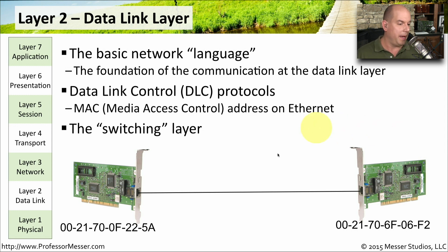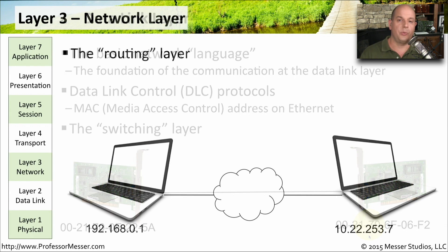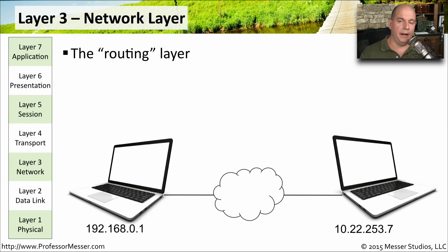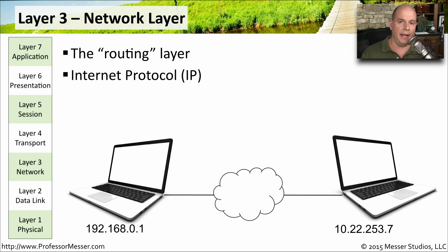You might have one MAC address on one side and one MAC address on the other side, and that communication between those devices is happening at OSI layer 2. Layer 3 of the OSI model is the network layer. Now we're talking about being able to route traffic from one side of the network to the other between subnets, so we often refer to this as the routing layer. This is where IP addresses live — if we're looking at an IP address, we're referring to a layer 3 address.